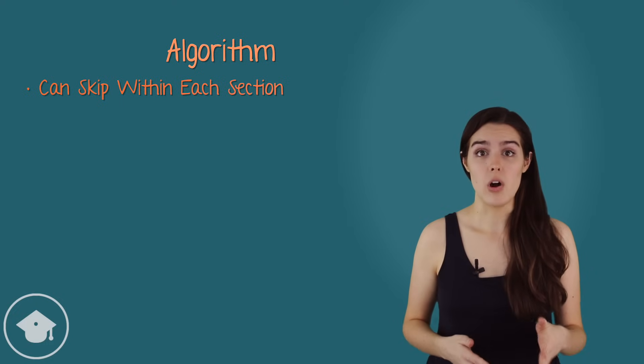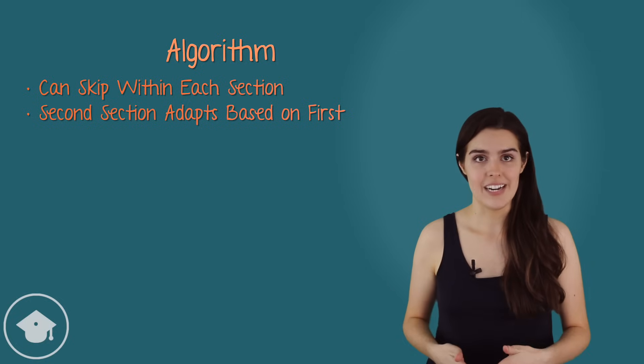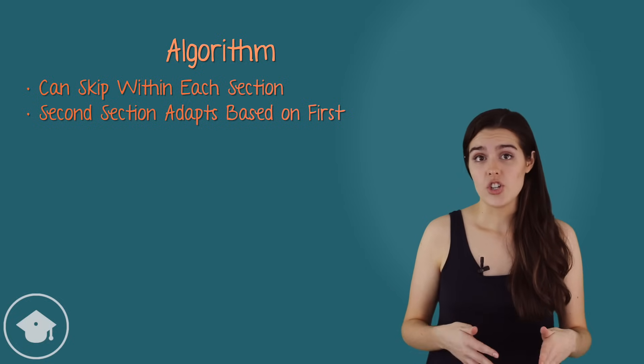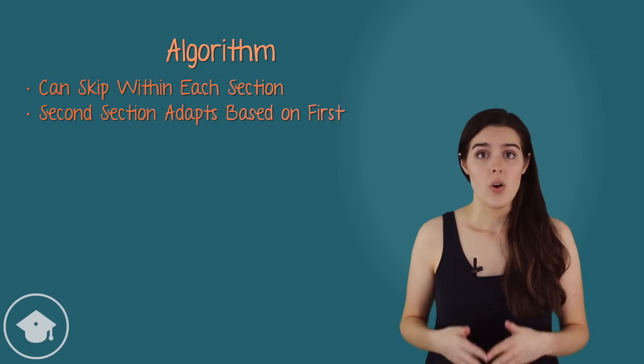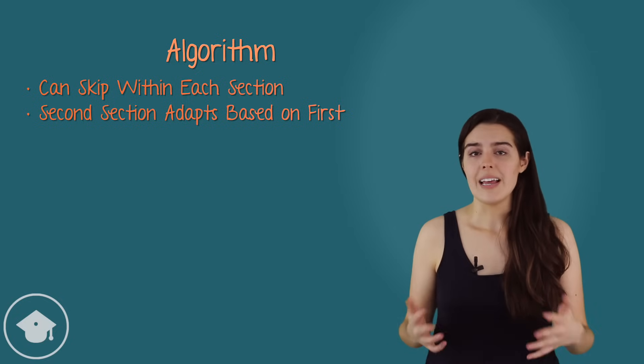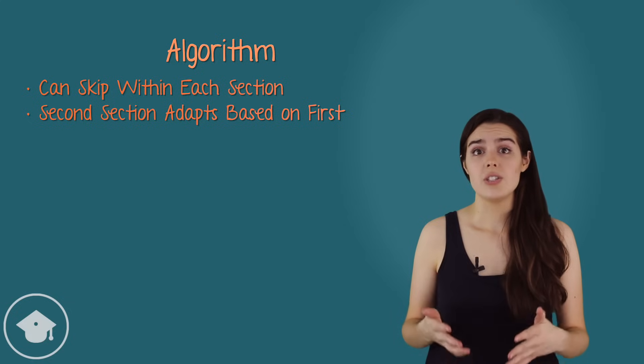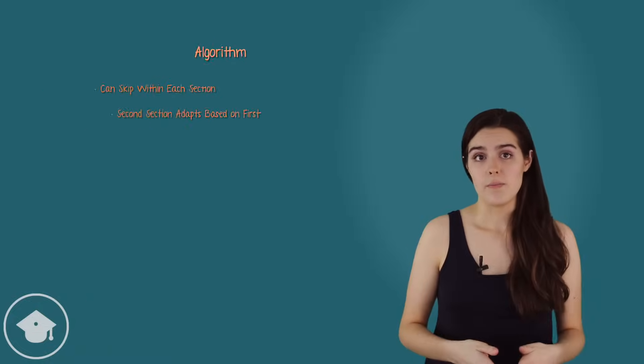Depending on the number of questions you get wrong and right on the first section, you will get one of three second sections. An easy second section, a medium second section, or a hard second section. While the section you get will vary, like the questions in the first section, the questions in the second section are preset. So once again, you can skip questions and come back to them.